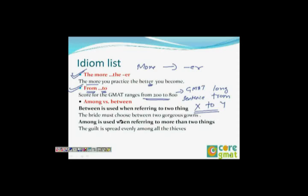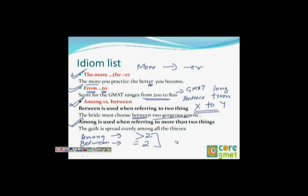Between vs. among: we use 'among' when referring to more than two things, and 'between' when referring to exactly two things. For example, 'the bride must choose between two gorgeous gowns' — just two, so we use 'between.' But 'divided evenly among all the thieves' — 'all' implies more than two, so we use 'among.'